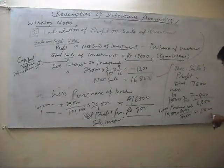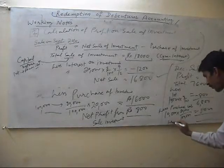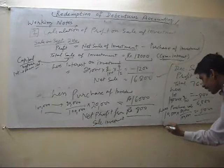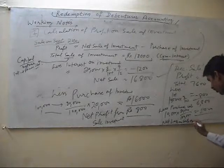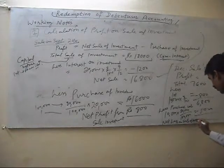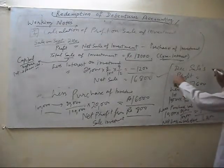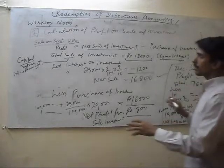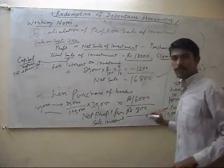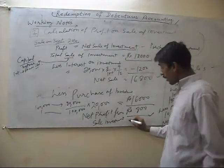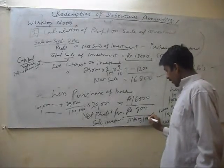Now, the purchase value is more than the sale value, and this is a loss. Net loss on sale of investment is 1,200. In the December sale, we get a loss. Both the profit from the first sale and the loss from the December sale are transferred to the sinking fund account.